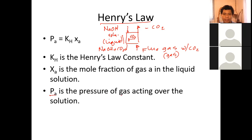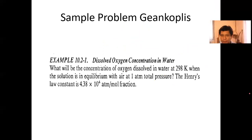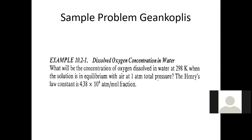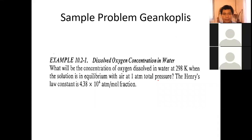P sub A here is the pressure of the gas acting over the solution. Let's try to solve Example 10.2.1 — a Henry's law problem on dissolved oxygen concentration in water. What will be the concentration of oxygen dissolved in water at 298 Kelvin when the solution is in equilibrium with air at 1 atmosphere total pressure? The Henry's law constant is 4.38 × 10⁴ atmosphere per mole fraction.